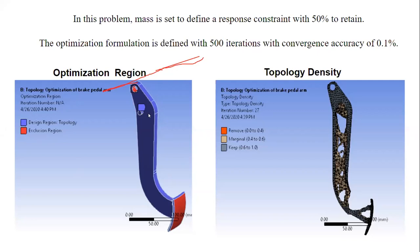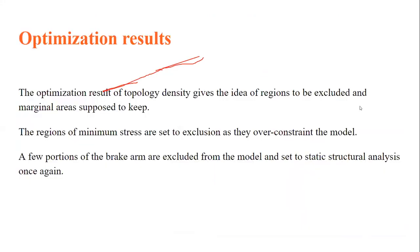Only the blue region, which is not attached to boundary conditions, is subject to optimization. After running topology optimization, ANSYS provides a rough result as a topology density plot. This is the optimized geometry through which I can achieve 50% of the original mass. The solver automatically removed minimally stressed regions and retained the more stress-dominant areas, giving a rough idea of which regions to exclude and which to keep.